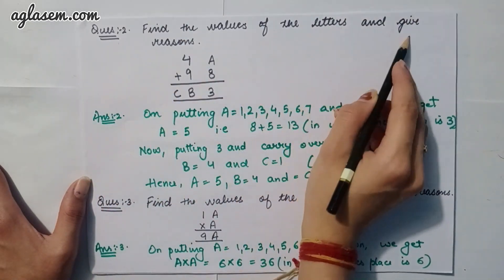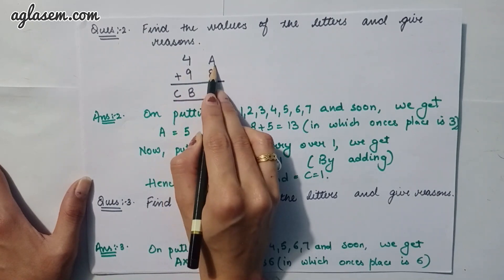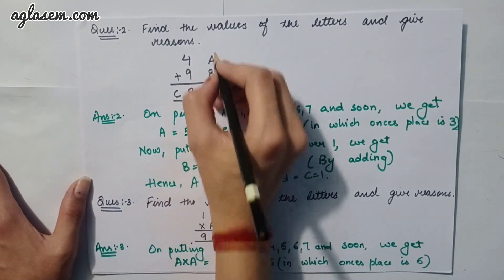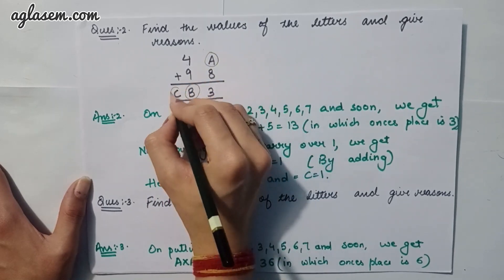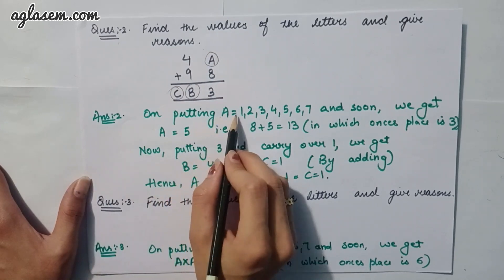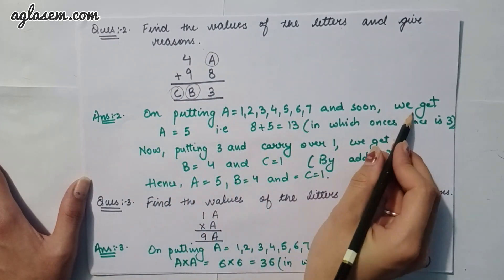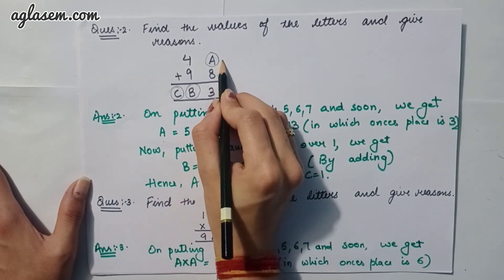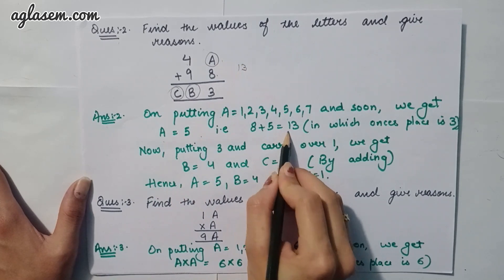Moving to the second question: find the value of letters and give reasons. The problem is 4A + 98 = CB3. We have to find A, B, and C. On putting A as 1, 2, 3, and so on, we get A = 5, because 8 + 5 = 13, whose ones digit is 3.